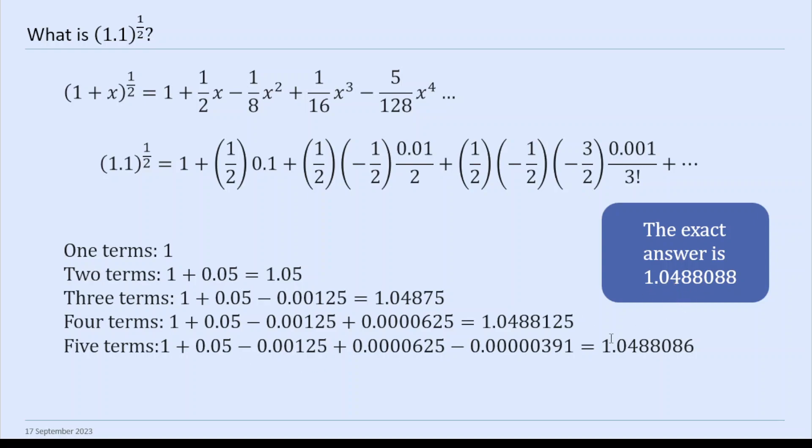And then five terms, 1.0488086. So it's correct, except for the very last digit. So 7 sig figs. It's pretty impressive stuff, so it's converging quite quickly. And the reason is because if you keep taking powers of 0.1, the terms get small quite quickly. So it's an infinite series, but you don't need that many to get a good approximation.